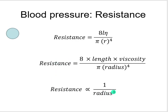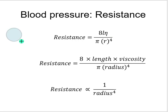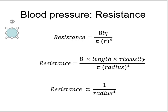The last important point about this equation: radius is raised to the 4th power. Because of this exponent, a small change in radius leads to a dramatic change in resistance. If you vasodilate just a little bit, that leads to a dramatic drop in blood pressure. If you vasoconstrict just a little bit, that leads to a massive increase in peripheral resistance and therefore blood pressure.